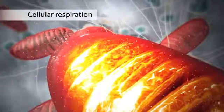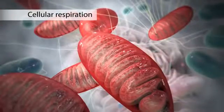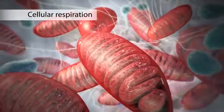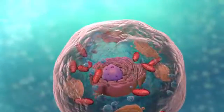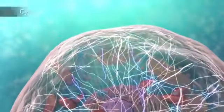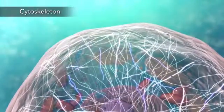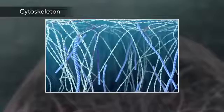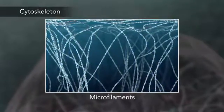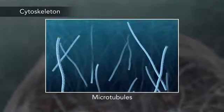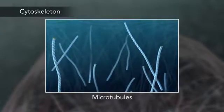Cells that need more energy have more mitochondria. Meanwhile, the cell maintains its shape through a cytoskeleton. The cytoskeleton includes the thread-like microfilaments, which are made of protein, and microtubules, which are thin, hollow tubes.